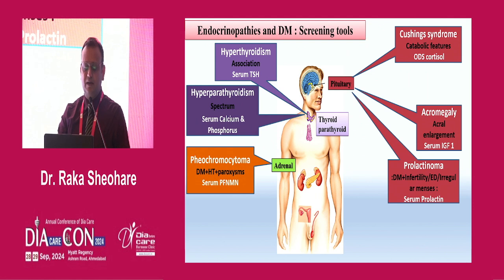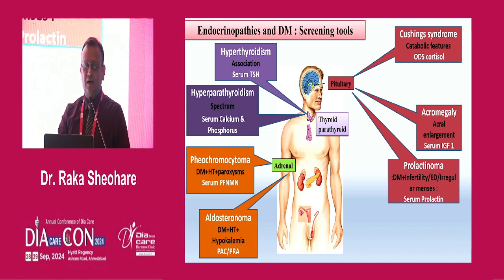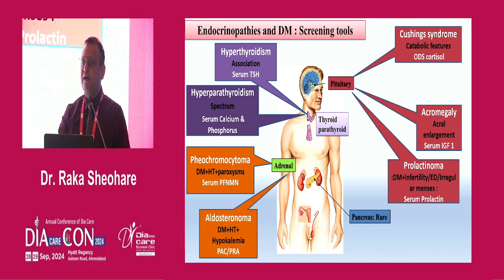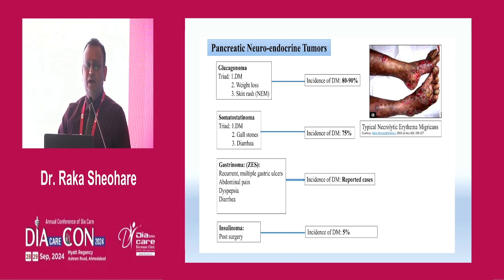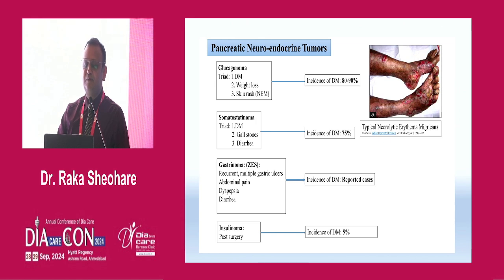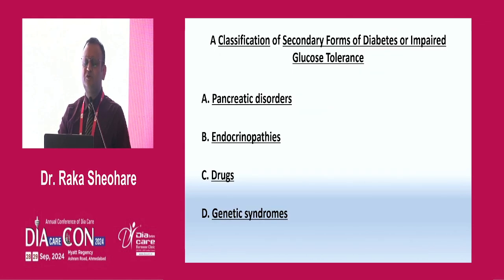For acromegaly, check serum IGF-1. For prolactinoma, a diabetic patient coming with infertility, erectile dysfunction, or irregular menses — check serum prolactin. For hyperthyroidism, check serum TSH. For hyperparathyroidism, check serum calcium and phosphorus. For pheochromocytoma with diabetes and paroxysmal hypertension, check urine or plasma metanephrines. For aldosteronoma in patients with hypokalemia, go for plasma renin activity (PRA) and plasma aldosterone concentration. For pancreatic neuroendocrine tumors — glucagonoma, somatostatinoma, gastrinoma, insulinoma — necrolytic migratory erythema or acanthosis nigricans is a clinical clue.